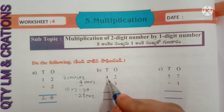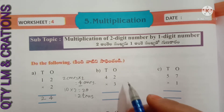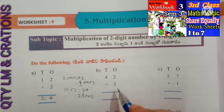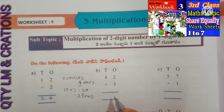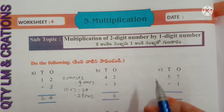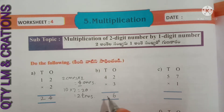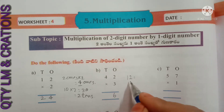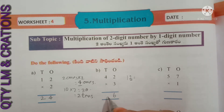B: 42 into 3. Multiply 2 ones with 3 — two threes are six — write 6 in the ones place. Next, multiply 4 tens with 3 — four threes are twelve, giving 12 tens. Write 2 in the tens place and 1 in the hundreds place.